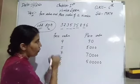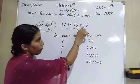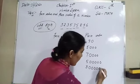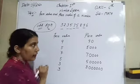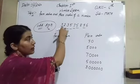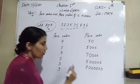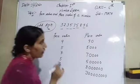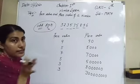Then three: face value is 3. Count digits after three: one, two, three, four, five, six — write six zeros, giving place value 3,000,000. The next three: face value is 3, count digits after it: one, two, three, four, five, six, seven, eight — write eight zeros, giving place value 300,000,000. That is the face value and place value of all the odd digits.